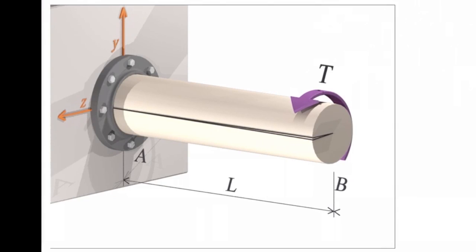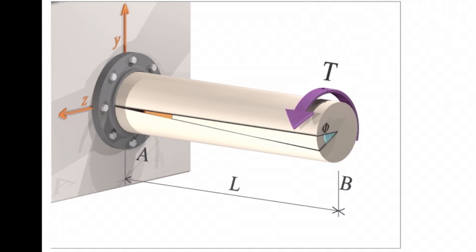This is how an element deforms when it is subjected to torsion. As we discussed before, there's not any change in the length of the element, but the element twists.